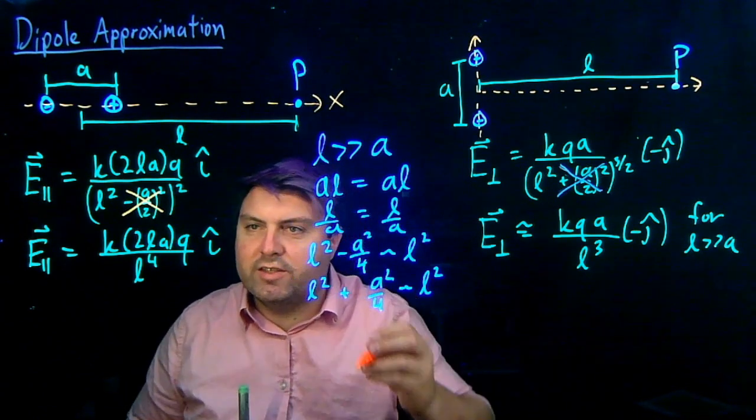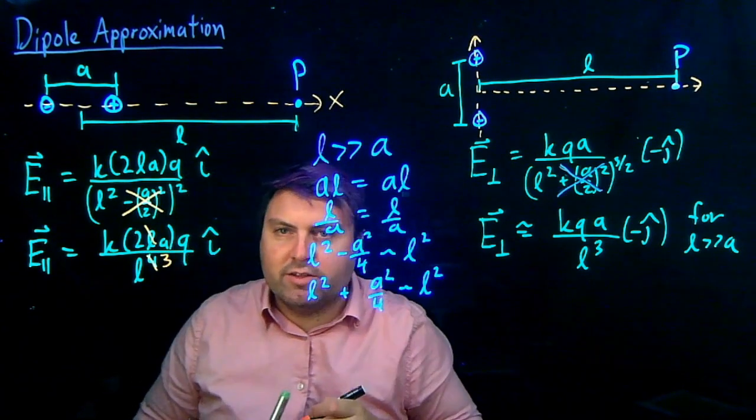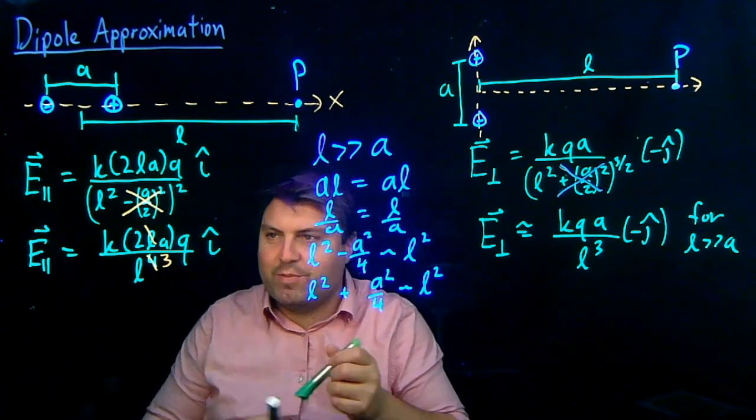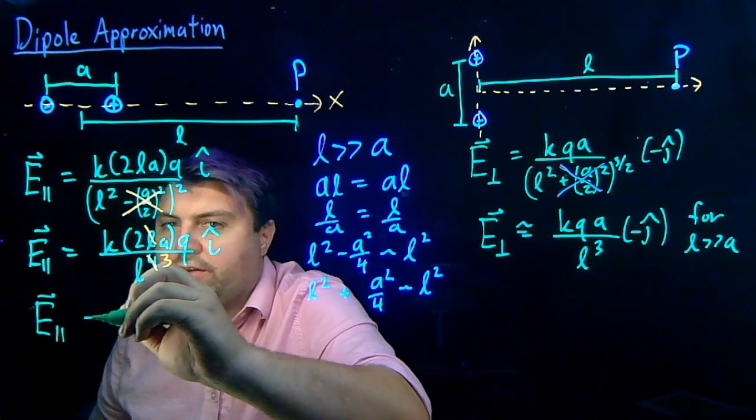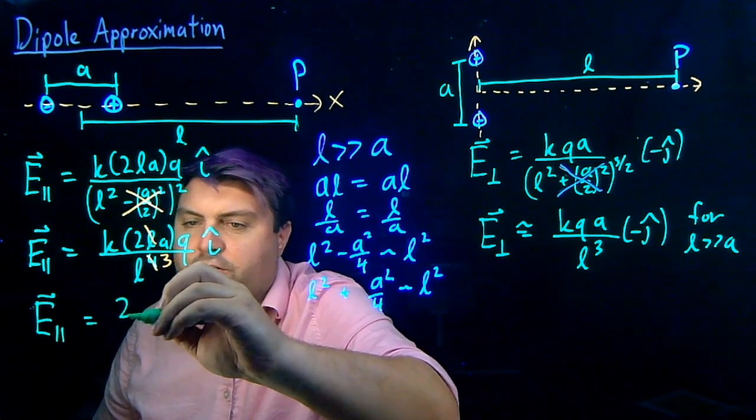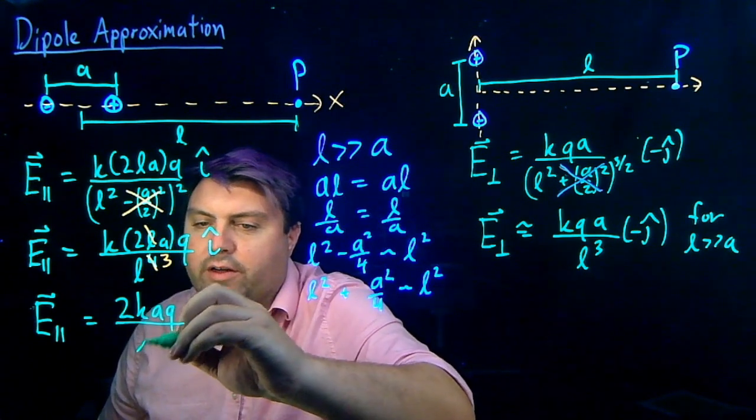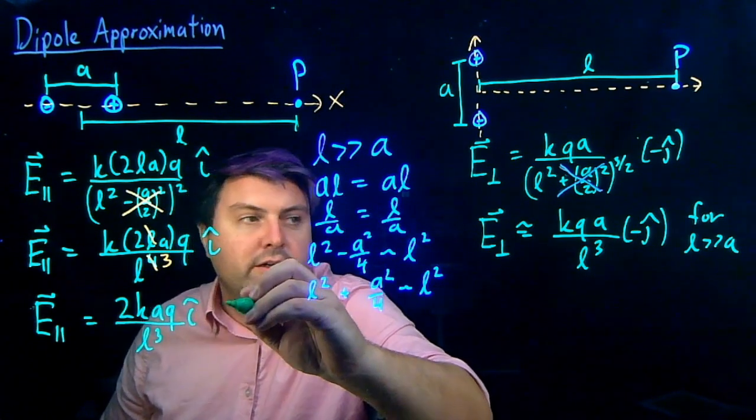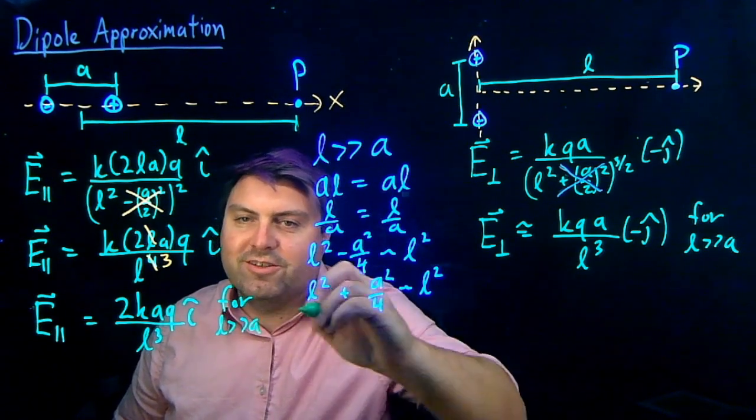Just a tiny bit more cancellation to do. This L cancels with that, right, we get a 3rd power here, and so now we have our electric field parallel is going to be 2K AQ over L to the 3rd I hat, right, and this is again for L much, much larger than A.